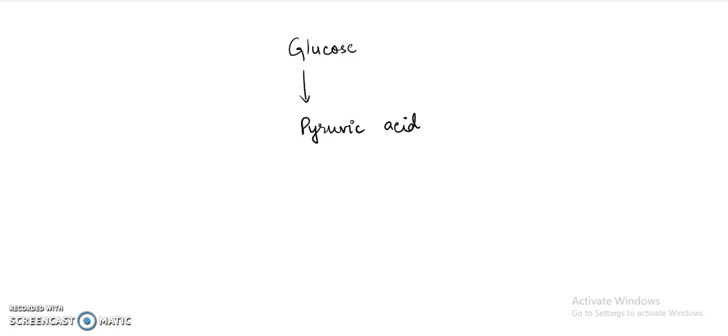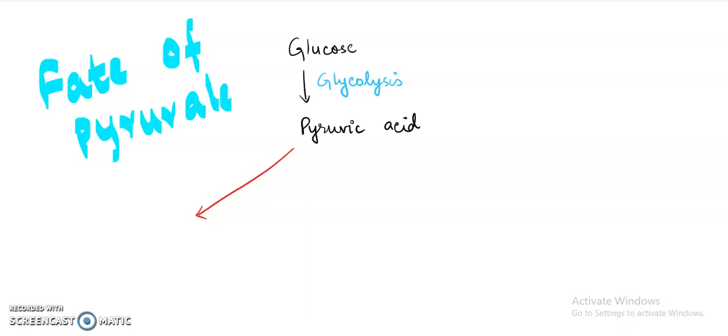Now we have seen that one molecule of glucose by glycolysis has formed pyruvic acid, and this is a mandatory step of the respiration process. Now after this process, once the pyruvate is formed, the fate of the pyruvate will be decided by various factors.